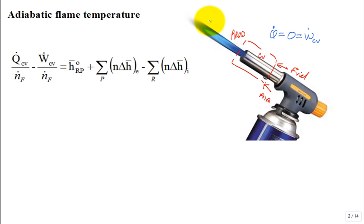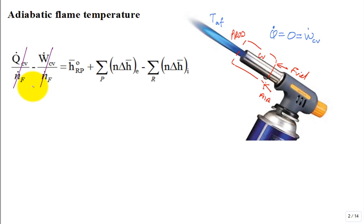It's the highest temperature — we'll call it the adiabatic flame temperature. How would we calculate it? Go back and write the first law for a control volume, say it's adiabatic, there's no work. We have this term — the standard enthalpy of combustion.